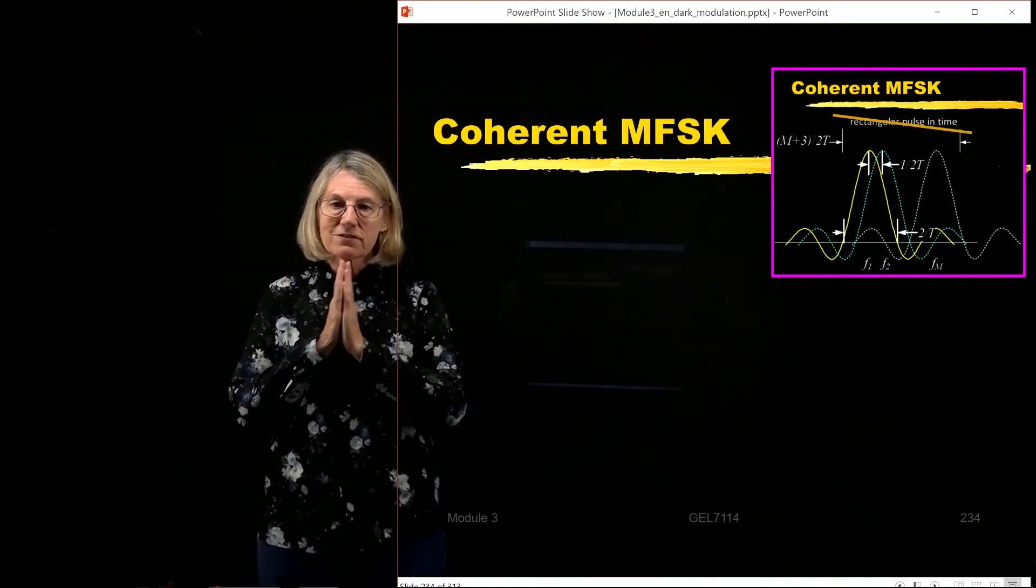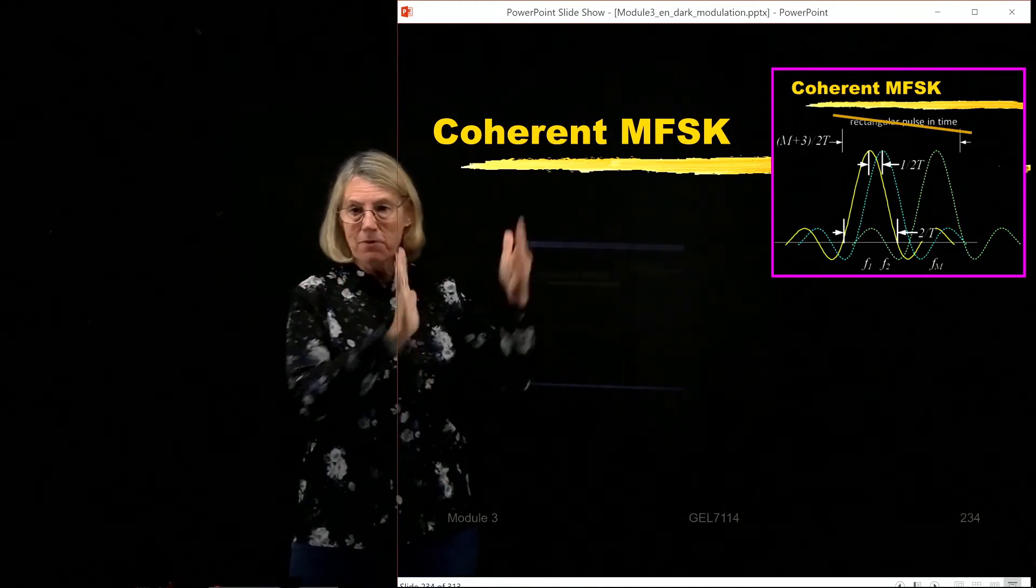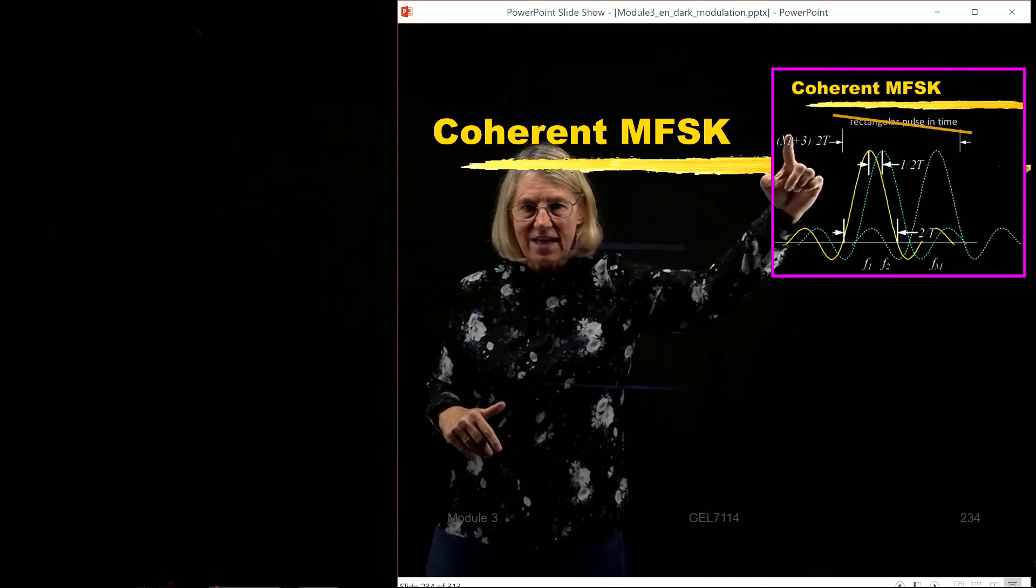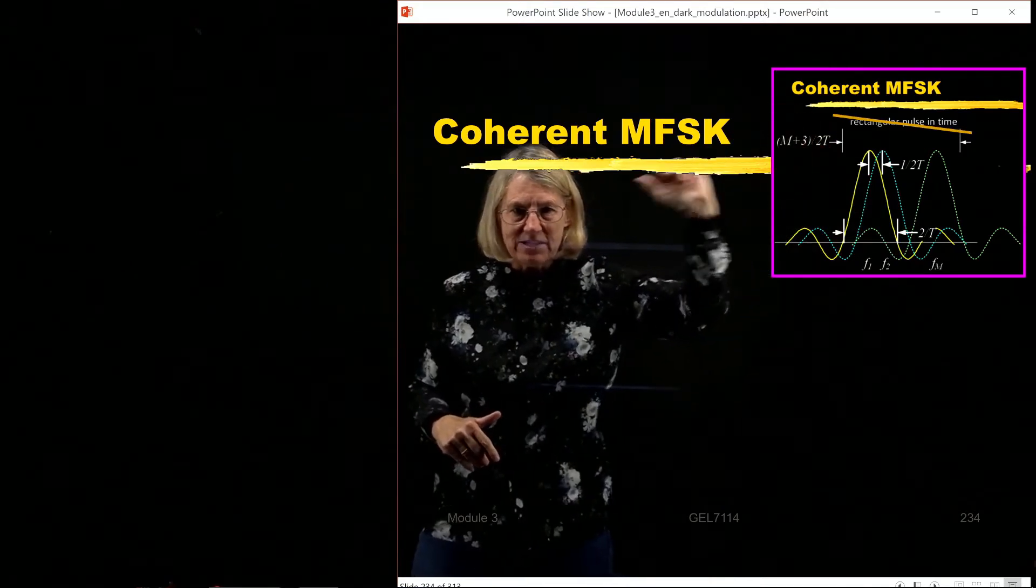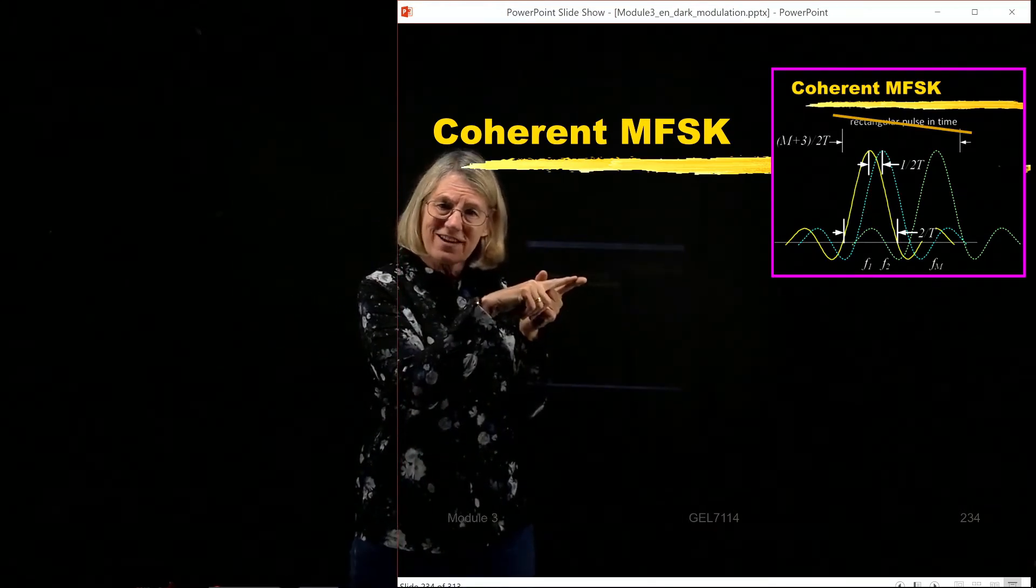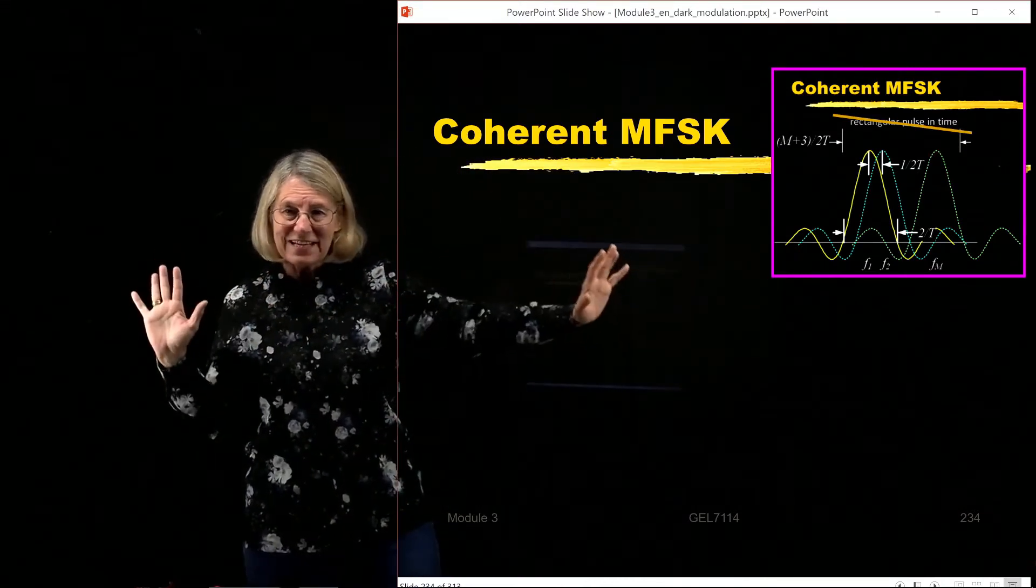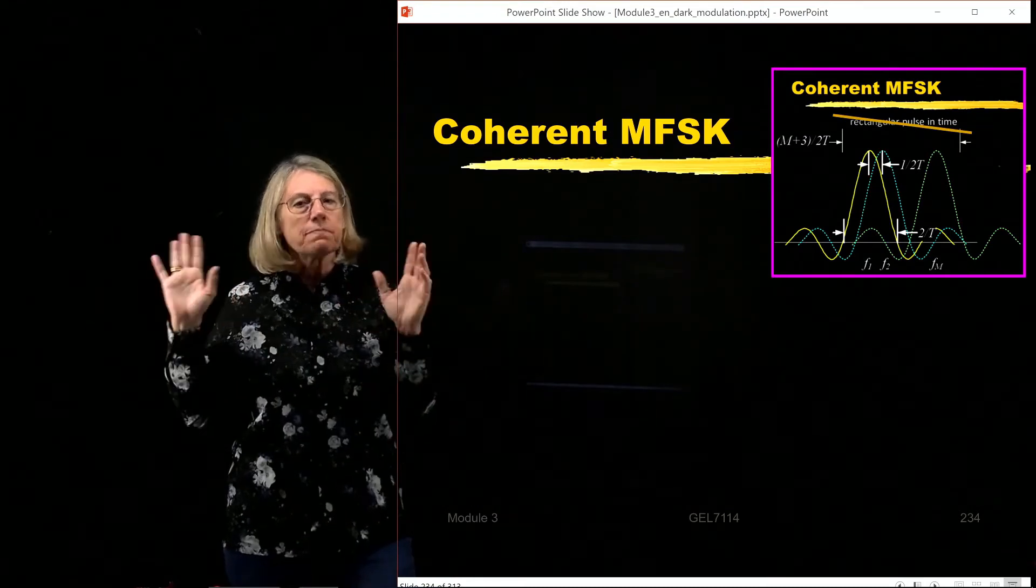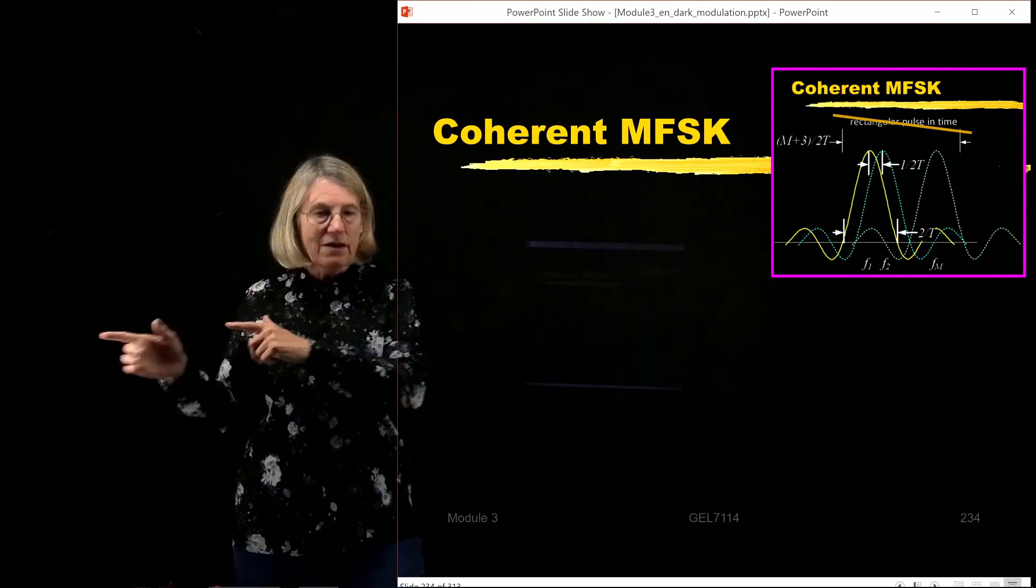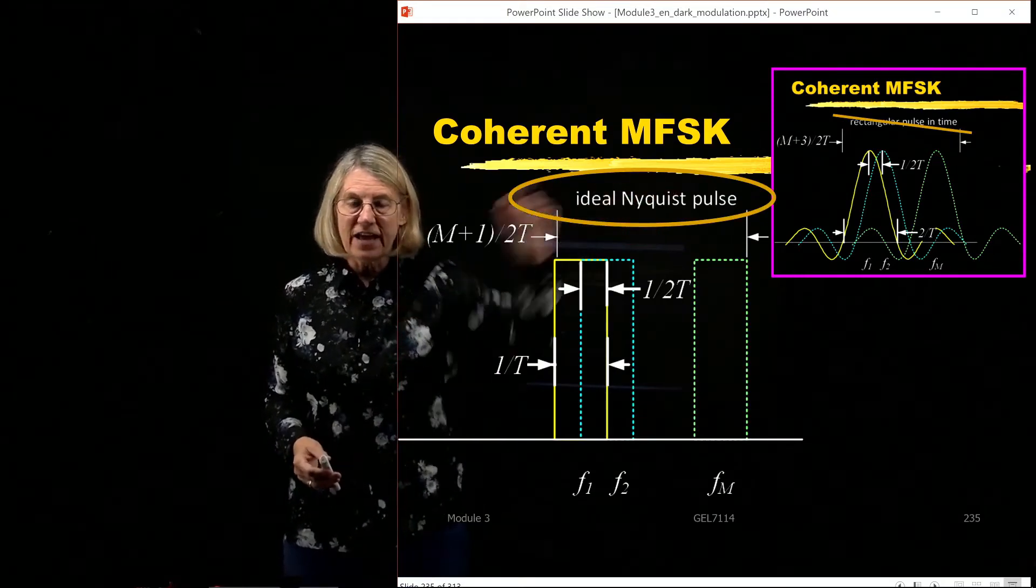So let's go back to our previous discussion of coherent FSK. Before when I said I'm going to stack m symbols in the frequencies one after another as tightly spaced as possible, I came up with this calculation, m plus 3 divided by 2t. But in that case, I was using square pulses in the time domain, which gave me sync pulses in the frequency domain. So that was okay to give you the basic idea, but now what I want to do is I'm going to say no, no. Suppose that I'm not using rectangular in the time domain. Suppose I'm using a sync function in the time domain, which means I'm using rectangular in the frequency domain. So I'm using an ideal Nyquist pulse.